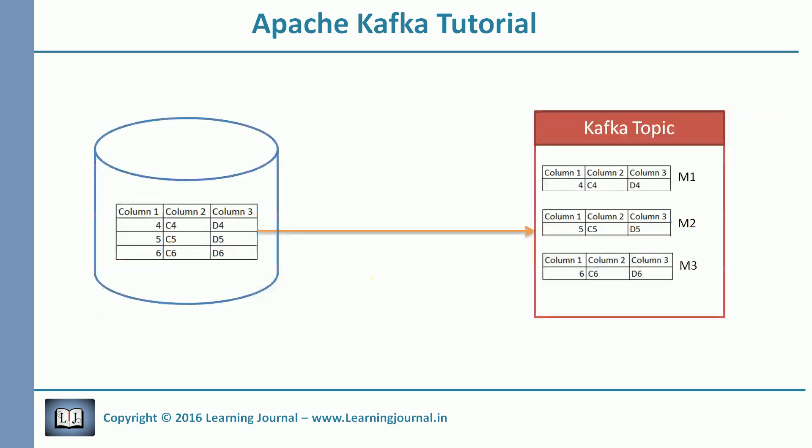If you are coming from a database background, you can think of a topic like a table and each message sent to the topic like a record. Those records are not always just a single string or a number. Normally we have multiple columns in a record. So when working with Kafka, we need to be able to send a record of multiple columns.